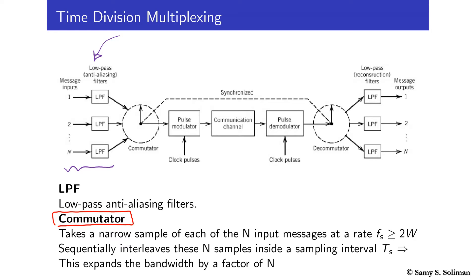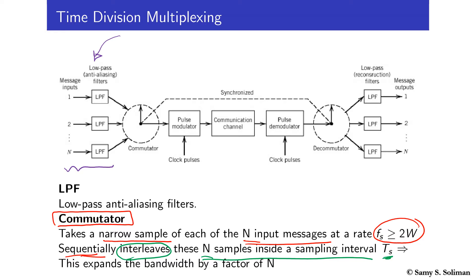So that is the first part — preparing the signals for sampling. Now, how do we perform sampling and multiplexing? The main component for this is the commutator. The commutator takes narrow samples of each of the N messages at rates satisfying the Nyquist rate — meaning the sampling frequency is greater than or equal to twice the maximum bandwidth of the signal. The samples are taken sequentially. So one function of the commutator is sampling, and simultaneously it interleaves the N samples within a sampling interval Ts, which expands the bandwidth by a factor of N.